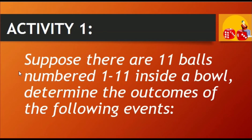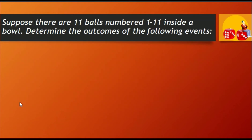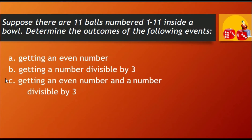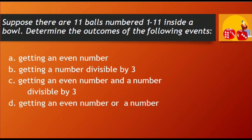Suppose there are 11 balls numbered 1 to 11 inside a bowl. Determine the outcomes of the following events: A. Getting an even number. B. Getting a number divisible by 3. C. Getting an even number and a number divisible by 3. And D. Getting an even number or a number divisible by 3.